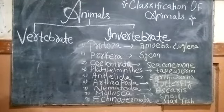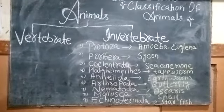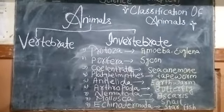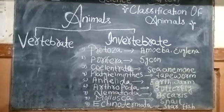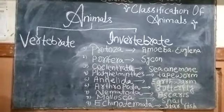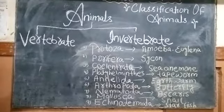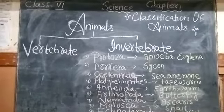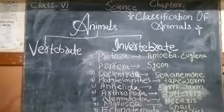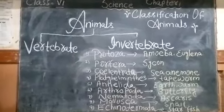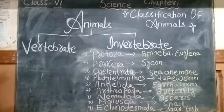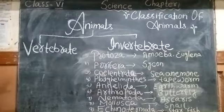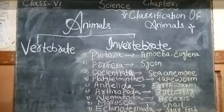Number 9: Phylum Echinodermata. Animals in this phylum have a spiny body surface. In this way, we have completed the 9 phyla of invertebrates. In this chapter, we have discussed all 9 phyla and given examples of animals found in each group.